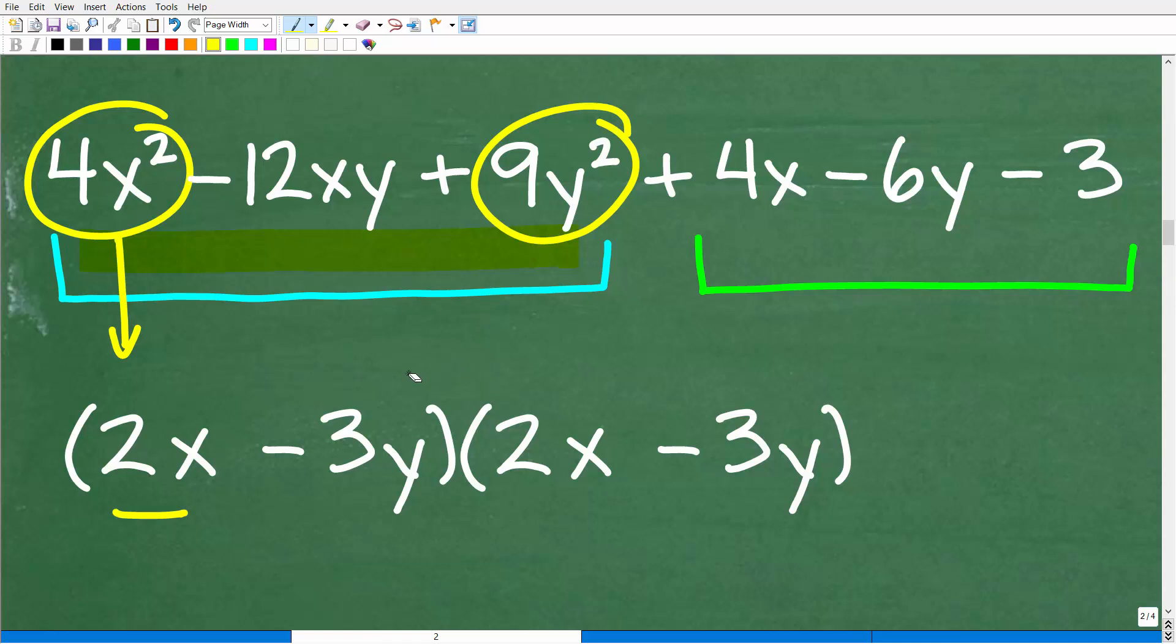Right here, this trinomial expression, 4x squared minus 12xy plus 9y squared, can be factored with these two binomials right here. 2x minus 3y times 2x minus 3y. Now, if you look right here, we have this 4x squared. If we take the square root of 4x squared, we have a 2x. And if we take the square root of 9y squared, that is 3y.